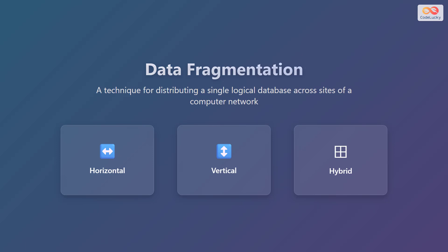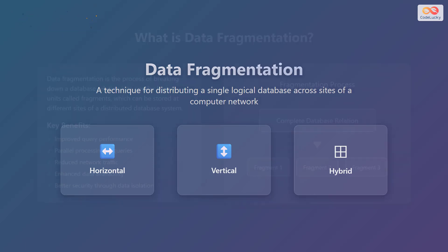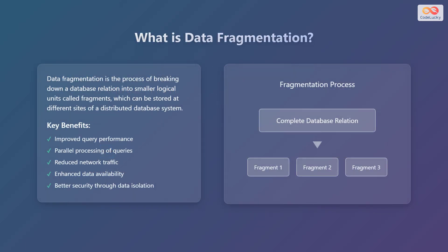Data fragmentation is a technique for distributing a single logical database across multiple sites in a computer network. Think of it like breaking a large book into chapters and storing each chapter in a different location for easier access. Data fragmentation is the process of breaking down a database relation into smaller, more manageable units called fragments, which can then be stored at different locations within a distributed database system.